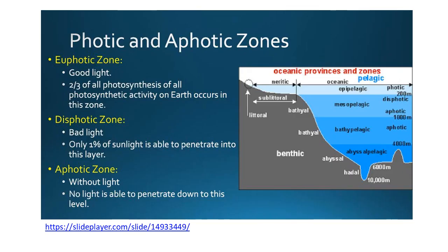We have the oceanic zones: euphotic zone, dysphotic zone, and aphotic zone. The euphotic zone — with the prefix eu meaning true — receives good light, and two-thirds of all photosynthetic activity on Earth occurs in this zone. The dysphotic zone, or bad light, has only 1% of sunlight able to penetrate. The aphotic zone — prefix a meaning without — has no light able to penetrate down to this level.